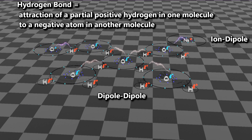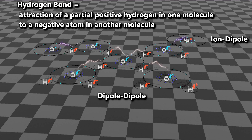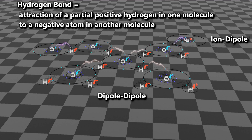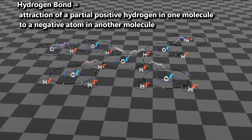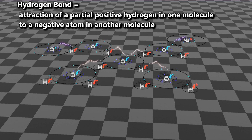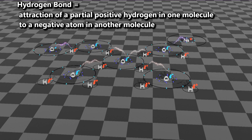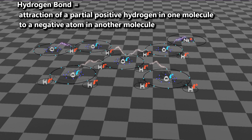That attraction is the ion-dipole. The hydrogen bond is the attraction between molecules, not atoms. The ions are atoms themselves, but this is an intermolecular force. The hydrogen bond is between molecules — it is not a bond of hydrogen to any other atom. That is a pretty important distinction.